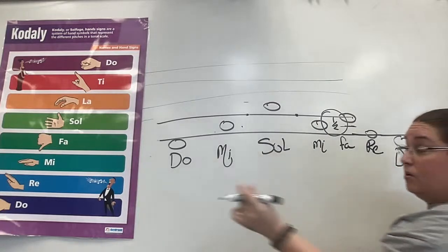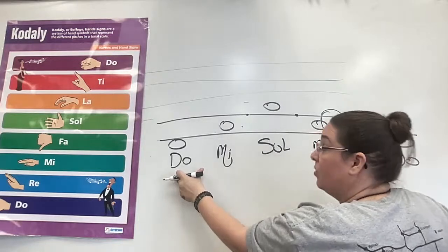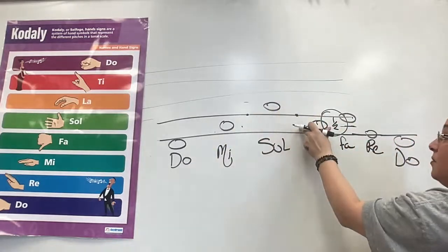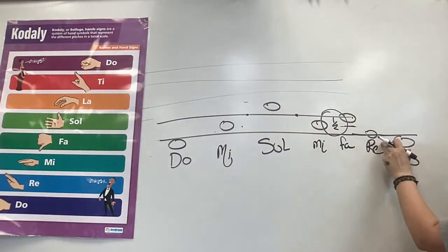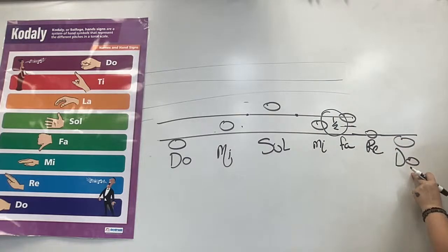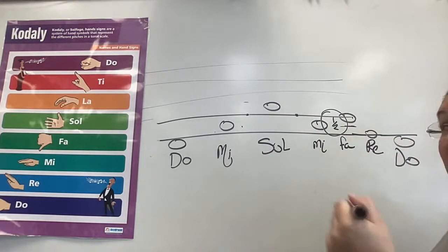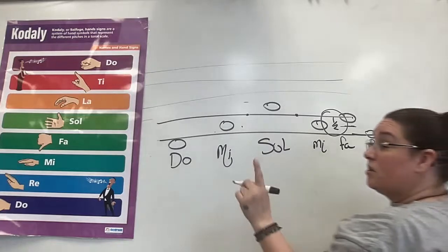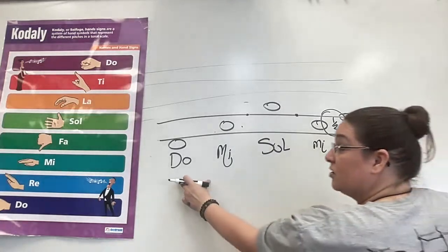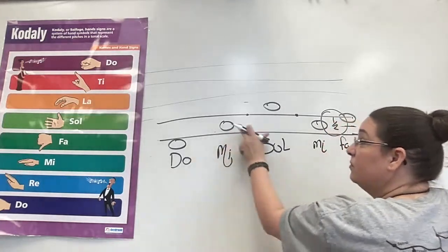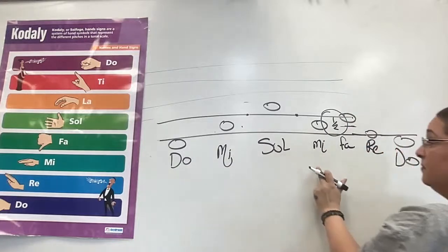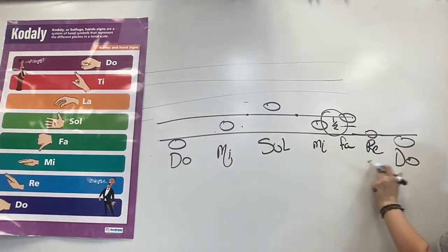So Do, Do, Mi, Sol, Mi, Fa, Re, Do. So I'm going to give you Do. Now you sing. I'll point and you sing. Ready? So Do. There's your pitch. Do. Do.